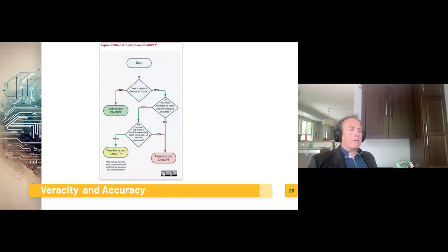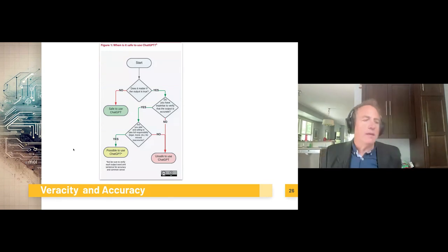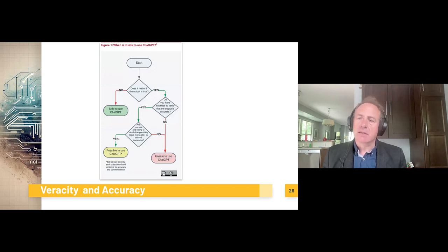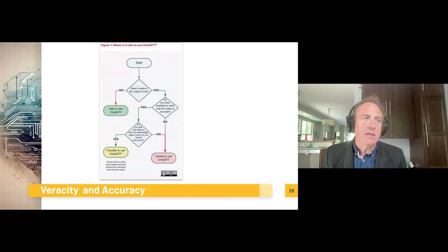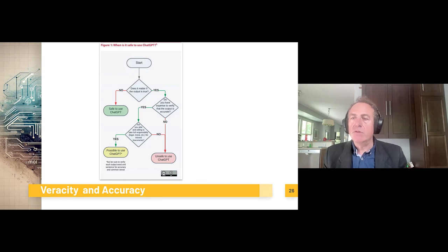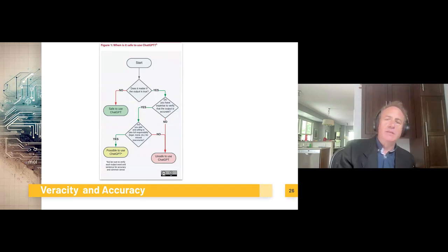Thinking about that term I mentioned before — these tools are 100% confident and 70% accurate — because of this lack of accuracy, we can get into a lot of challenges with misinformation by releasing things that aren't checked, or not having the expertise to check them. This diagram from UNESCO asks: when is it safe to use ChatGPT? It starts with: doesn't matter if the output is true — if no, it's probably safe to use. If yes: do you have the expertise to verify that the output is accurate? This is where it gets quite sticky, as a lot of us don't have the expertise to validate the content. What does this mean when we think about creating open texts, and what does it mean for the quality of information online and even the quality of human knowledge?